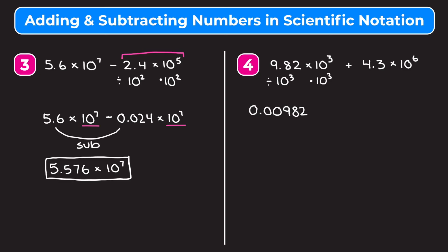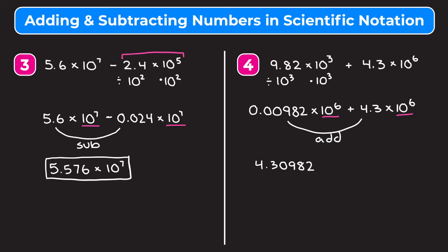And 10 to the third times 10 to the third is 10 to the sixth. I'm going to keep 4.3 times 10 to the sixth as it is. Now because we have 10 to the sixth multiplied by both of our numbers, we can just add 0.00982 and 4.3, which gives us 4.30982. And we multiply this by 10 to the sixth, so we get 4.30982 times 10 to the sixth as our answer.